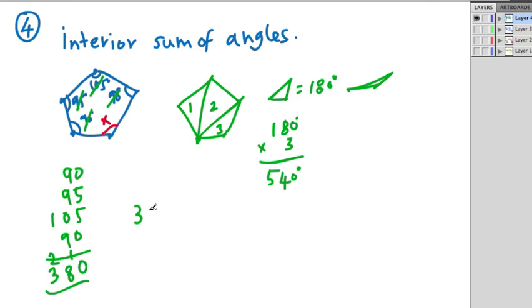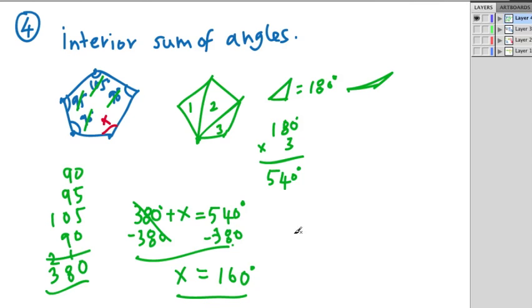We need the missing one. So we know that the 380 plus whatever the value of x is should equal 540 degrees. So this is a one-step equation. We subtract 380 from both sides. When we do that, the 380s cancel out. We're left with x equals 160 degrees. So that's our answer. The missing angle is 160, and that gives us the answer for number 4.